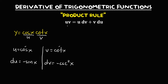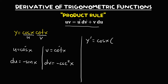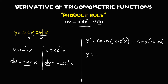Substituting all values into the product rule formula, we have y prime equals u times dv, so cosine x times negative cosecant squared x, plus v times du, so cotangent x times negative sine x. Then y prime equals negative cosine x times cosecant squared x, minus cotangent x times sine x.